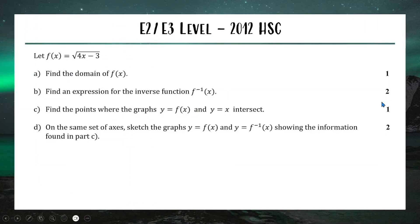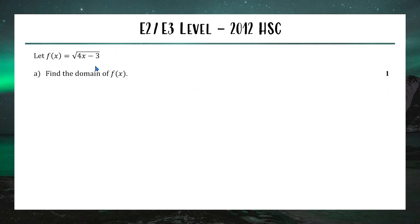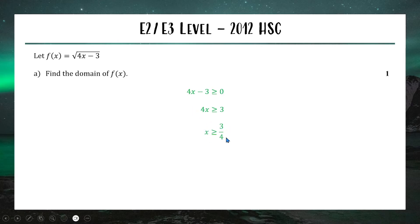Next up from the 2012 HSC, we have a function with several parts. Part one — find the domain of f(x) for one mark. The domain is what we can substitute in: we can only put non-negative values into a square root, so 4x minus 3 must be ≥ 0, which gives x ≥ 3/4. You can write this as x ≥ 3/4 or in interval notation as [3/4, ∞).